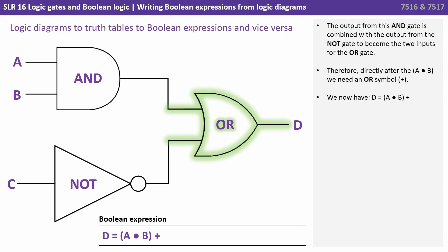Directly after the bit of the expression we've written so far, we need the Boolean algebra symbol for OR which is a plus. So we have D equals brackets A dot B brackets plus.